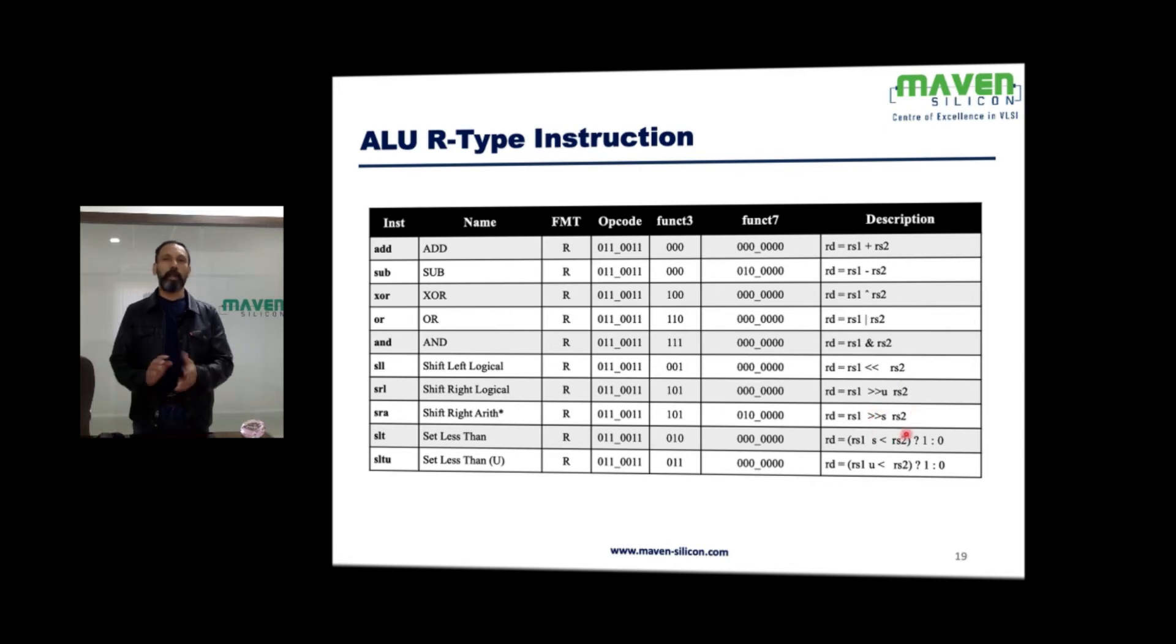The only difference is in case of shift right arithmetic, it is going to append the sign bit. We need to consider the MSB. If the MSB is signed, in case of positive numbers it is 0; in case of negative numbers it is 1. So the sign bit will be appended.